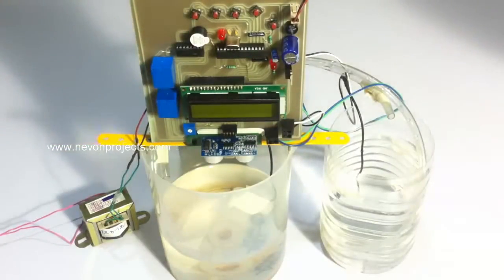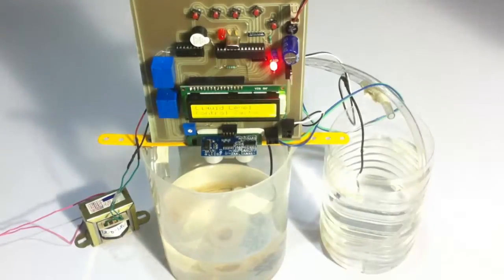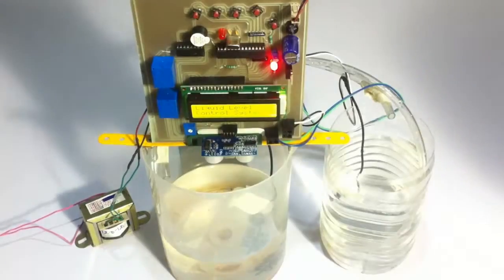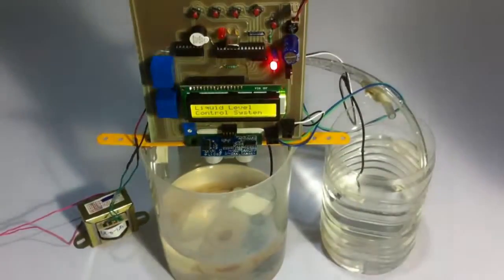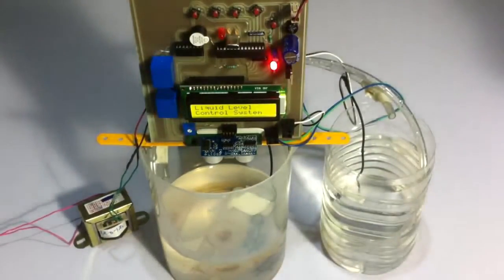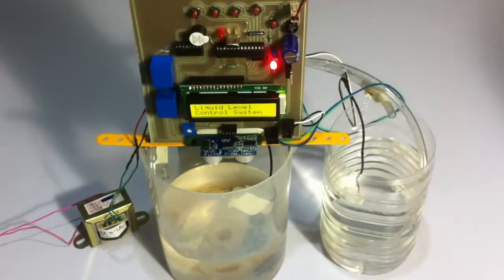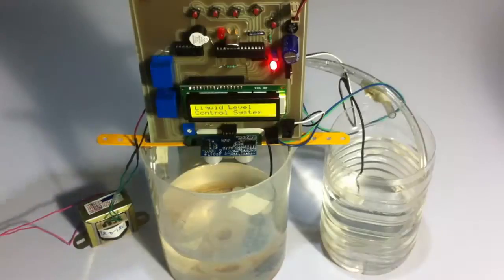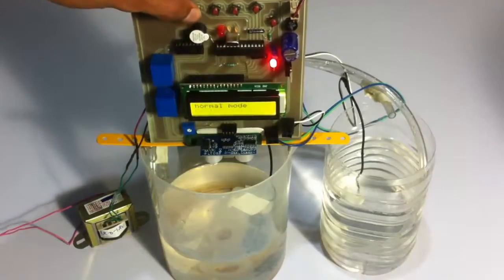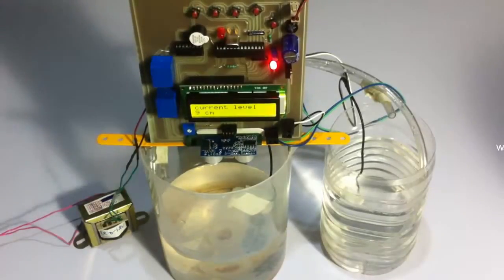We do provide you this setup for mounting the circuit on the container. You just have to arrange these containers since these cannot be provided by us. Let's turn on the system. The system has been turned on and it says the project name: liquid level controller system. Let's go into normal mode first.